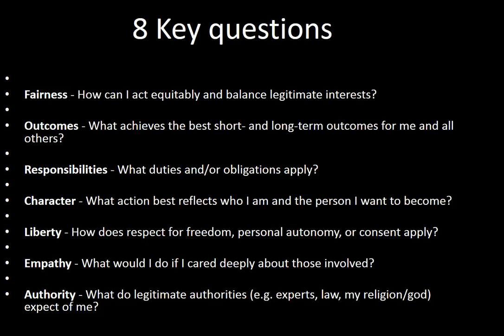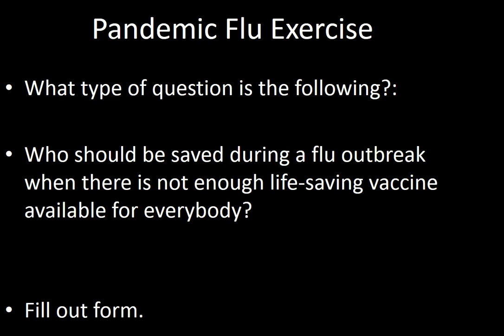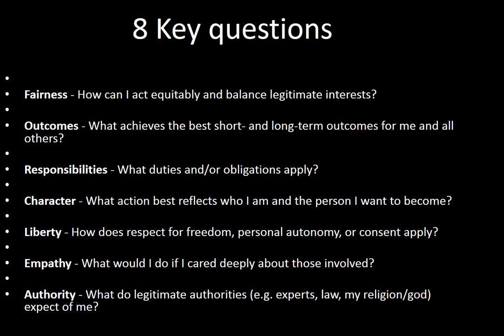I tell them: you've got 10 people and six are going to get the vaccine. Which of these eight questions do you think are going to be most important in terms of determining who gets the vaccine? I put them in groups, and they come up with — usually for the vaccine one — outcomes as being significant: who you pick based on what the outcome of that person being picked is going to be. They'll also come up with empathy. Fairness is another one that tends to show up, and this gives you a chance to discuss the questions.